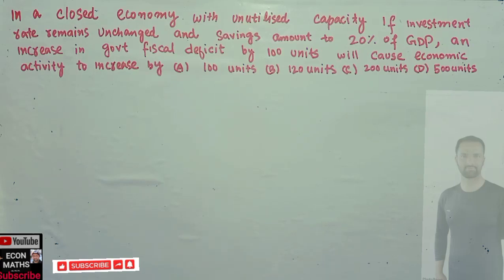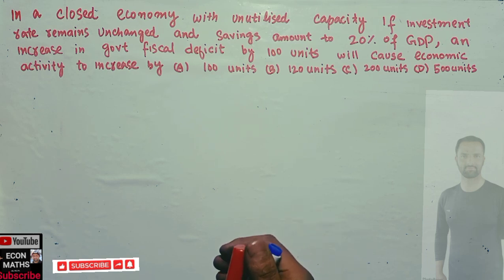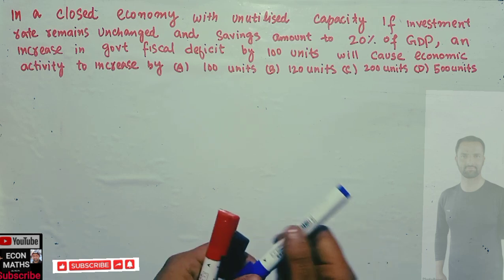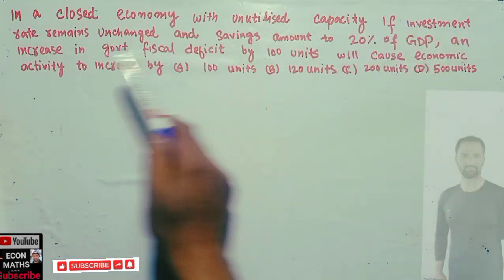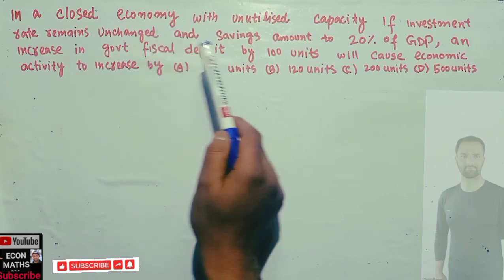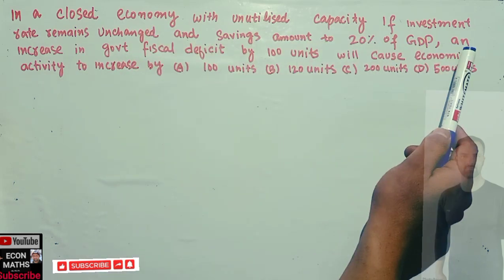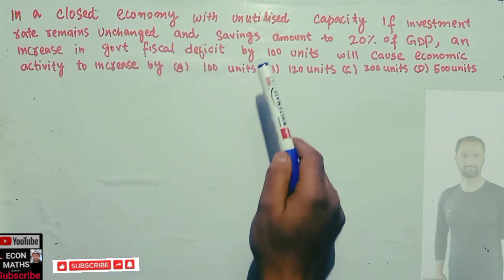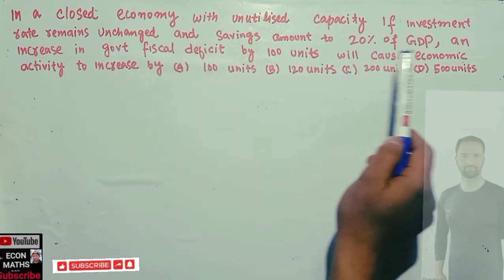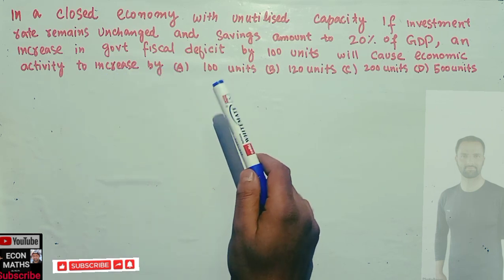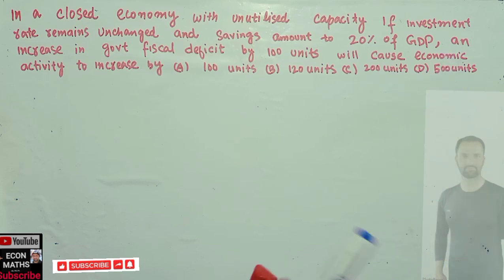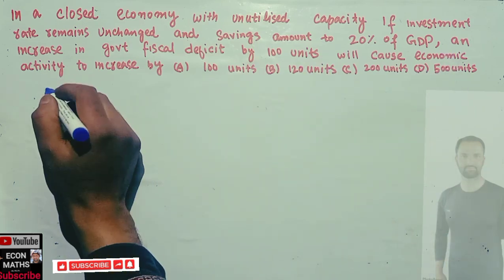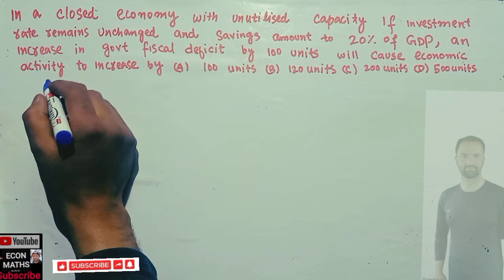Hi, this is Halal. In this video on the mathematical economics series, we will solve a problem on finding the change in economic activity when there is a change in fiscal deficit. The question is: in a closed economy with unutilized capacity, if the investment rate remains unchanged and saving amounts to 20% of GDP, an increase in government fiscal deficit by 100 units will cause economic activity to increase by how much? The options are 100 units, 120 units, 200 units, or 500 units. Since we have a closed economy, our GDP equation will be Y = C + I + G.